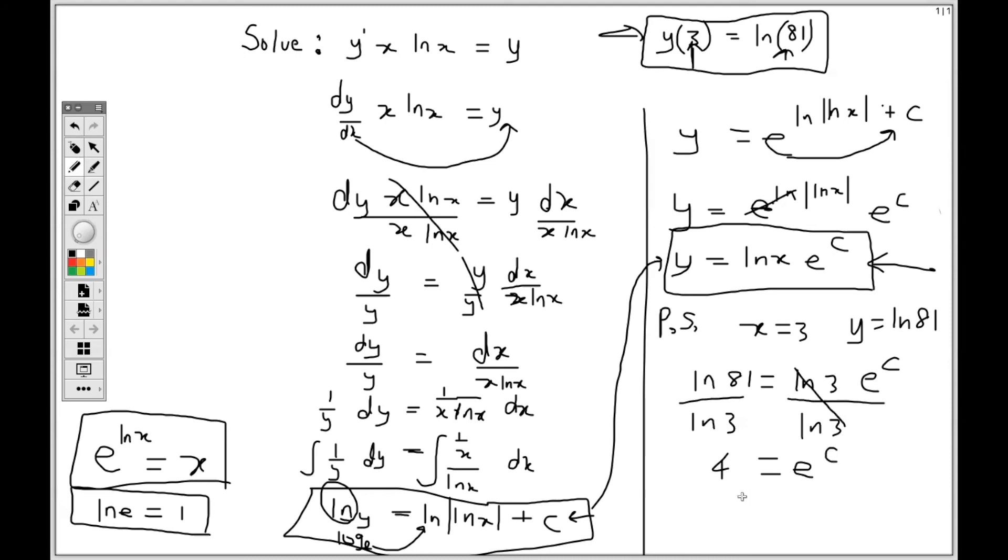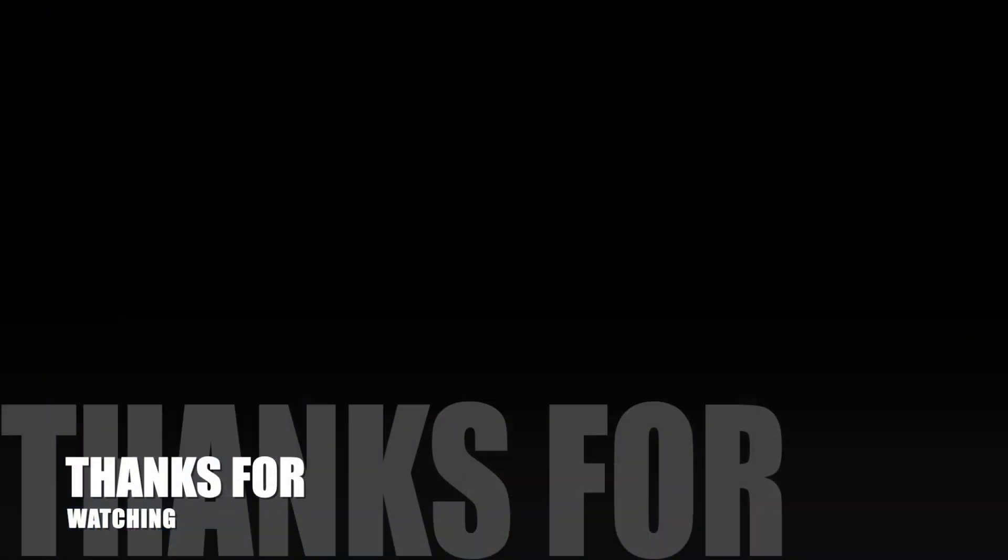Now, having this, I don't have to go further. I could just replace e to the c there as 4. Now, instead of writing the 4 behind the lnx, I am going to write at the front. So I will have y equal 4 ln x. It's the same thing as writing ln x times 4, but I just don't want it to look like it's 4x. Now, the ln rule is saying that we can rewrite this as a power. So this is the same as ln x to the 4th. And this is our particular solution, y equal ln x to the 4th. And that's it.